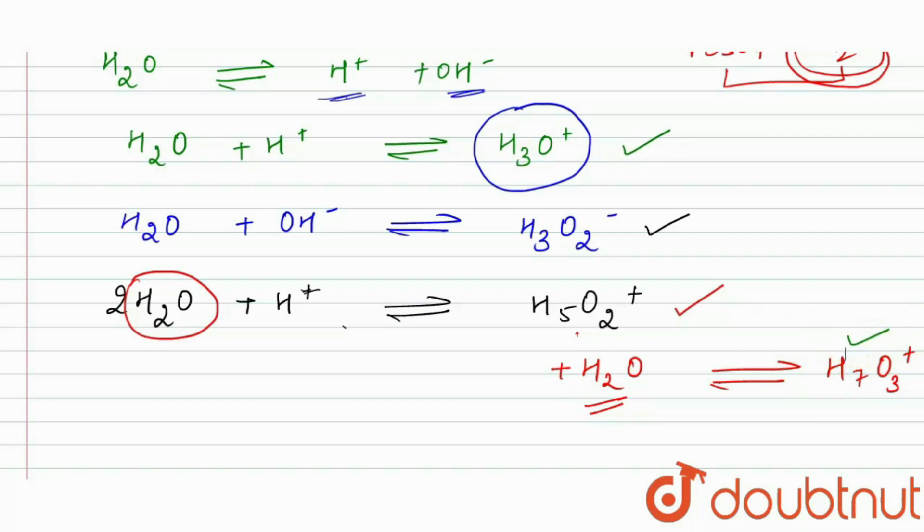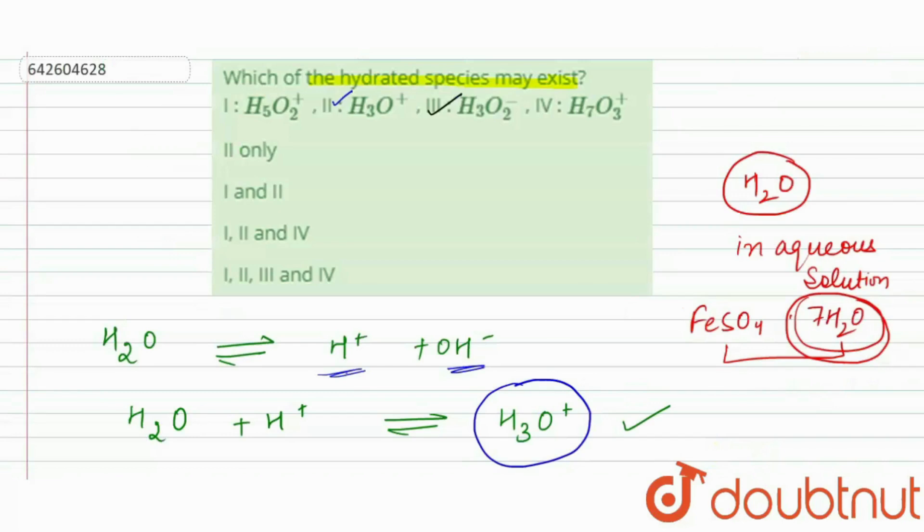So we can say that H5O2 plus and this process goes on. So here if it further reacts with water or H positive ion, so it will also be our hydrated species. So H5O2 positive and H7O3 positive are also our hydrated species.